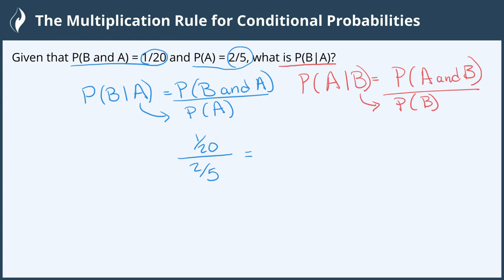Now we don't divide fractions, we actually multiply by the reciprocal. So this is 1/20 multiplied, switching the numerator and denominator for the second one, gives us 5/2.